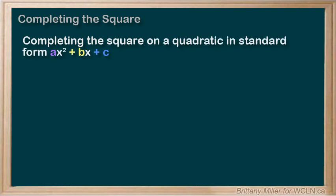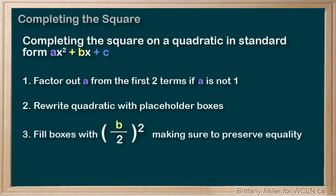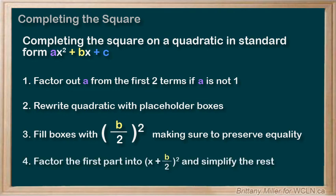To recap, here are our steps for completing the square. If a is not 1 then you need to take a out of the first two terms of the quadratic and proceed from there. Then we rewrite our equation with the placeholder boxes. We fill those boxes with b over 2 squared and then we factor the first part of the quadratic into x plus b over 2 squared and simplify the rest.